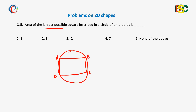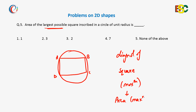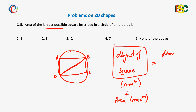When will the area of the square be largest? The area will be maximum when the diagonal of the square is maximum, since the maximum length in a square is its diagonal. So we need to find when the diagonal of the square is maximum.